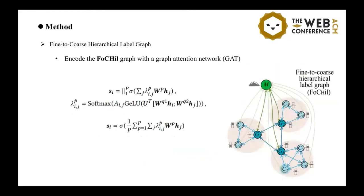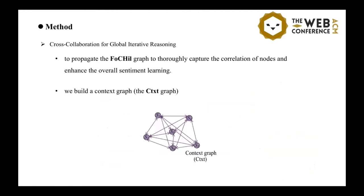Then, once we built a graph, we encoded the graph with a GAT, graph attention network. Then, we propose a cross-collaboration mechanism for global iterative reasoning, which aims to thoroughly capture the correlations of nodes and enhance the overall sentiment learning.